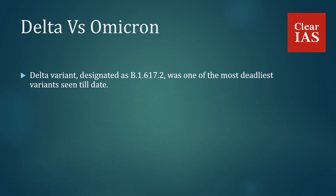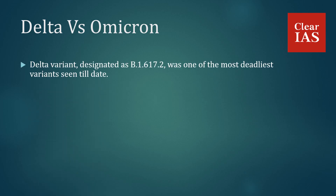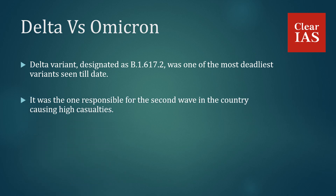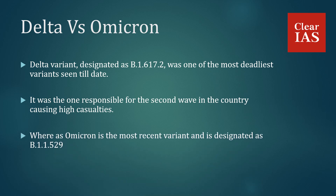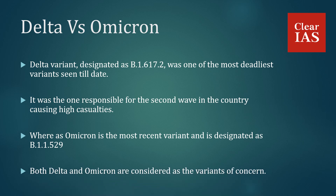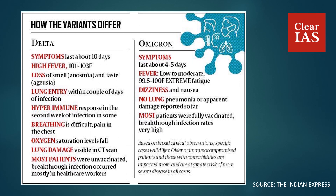Delta vs Omicron. The Delta variant, designated as B.1.617.2, was one of the deadliest variants seen to date. B.1.617.2 is the scientific name; for easy identification they are named Delta, Omicron, Alpha, Beta, etc. Delta was responsible for the second wave in the country, causing high casualties. Omicron is the most recent variant and is designated as B.1.1.529. Both Delta and Omicron are considered variants of concern. In the case of Delta, symptoms lasted about 10 days, whereas in the case of Omicron they lasted about 4–5 days.